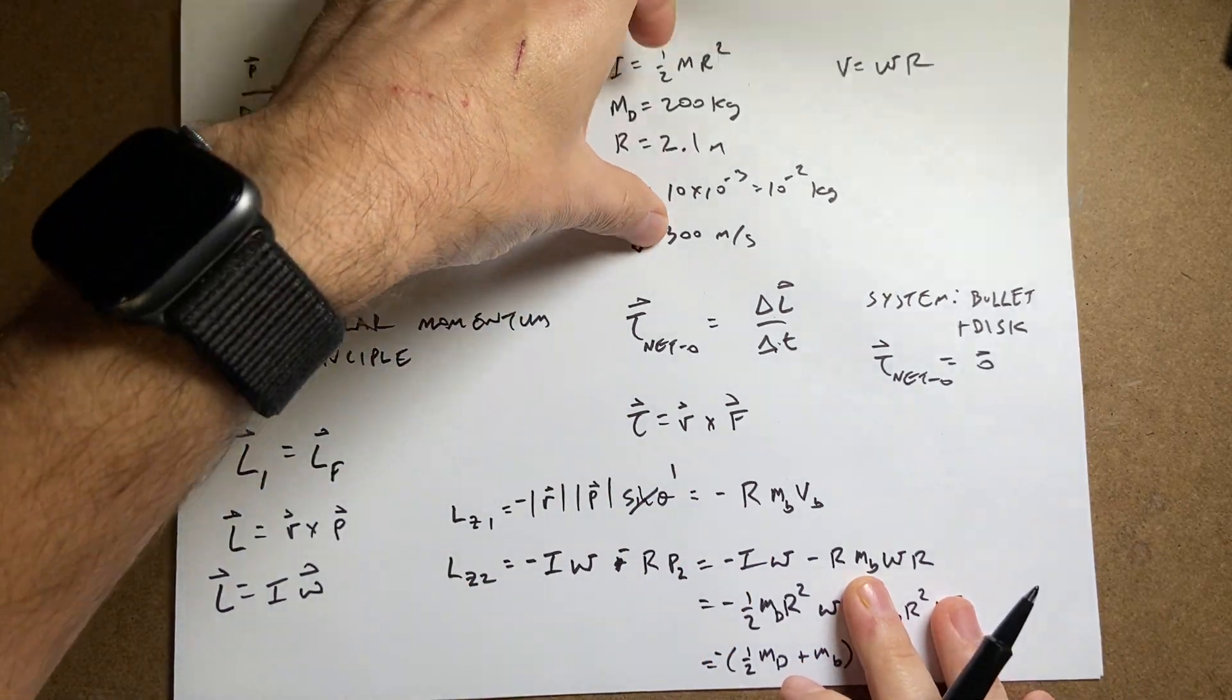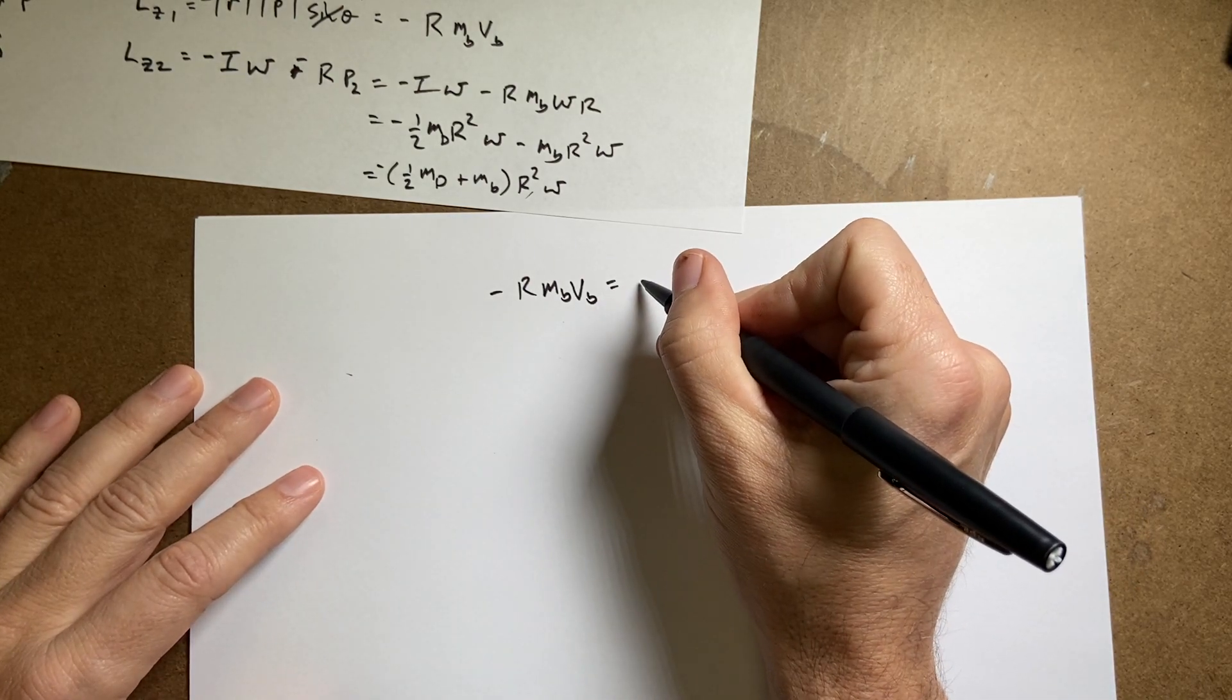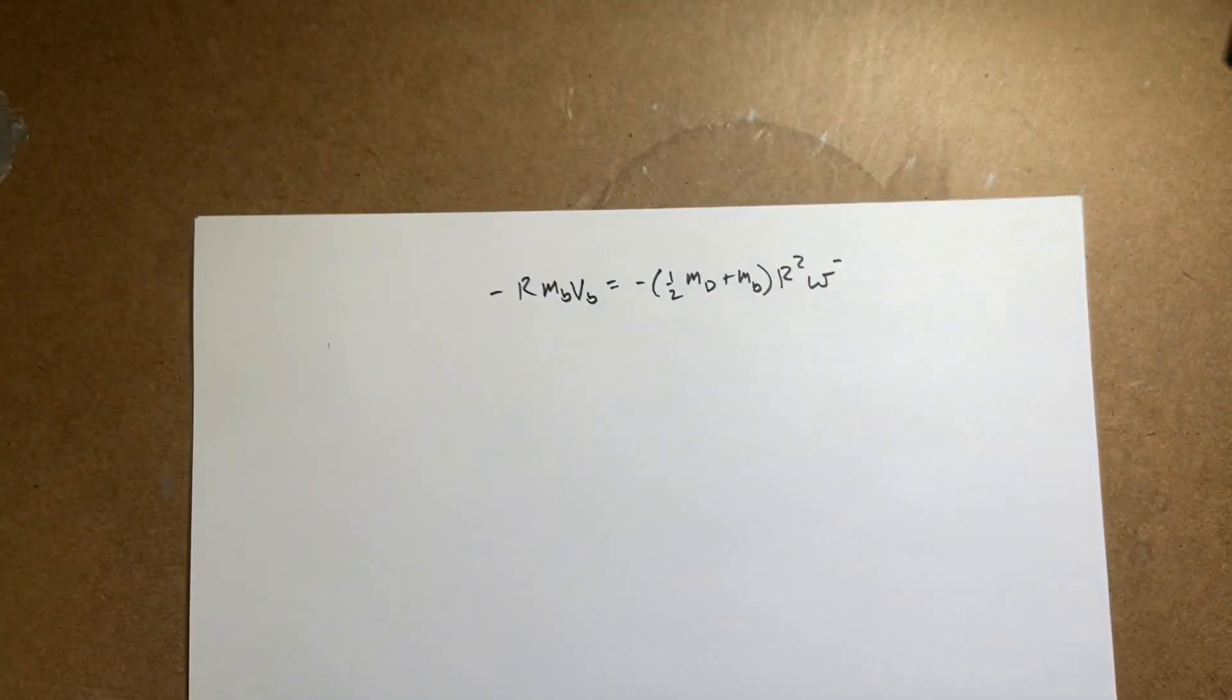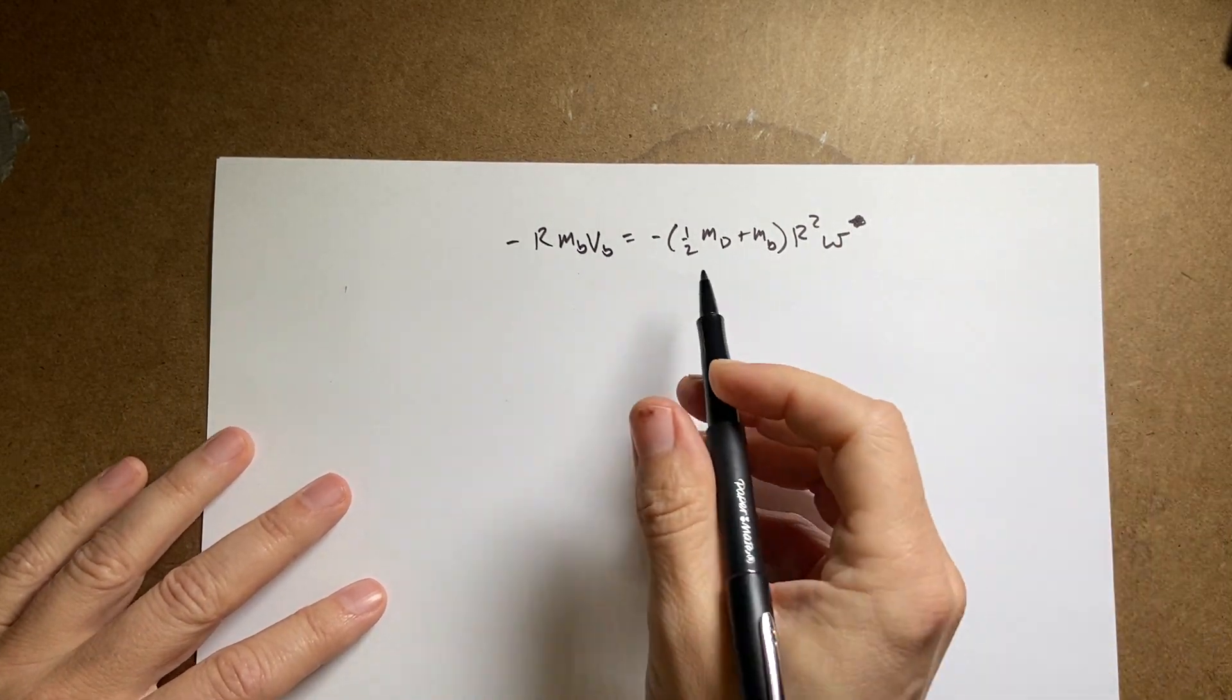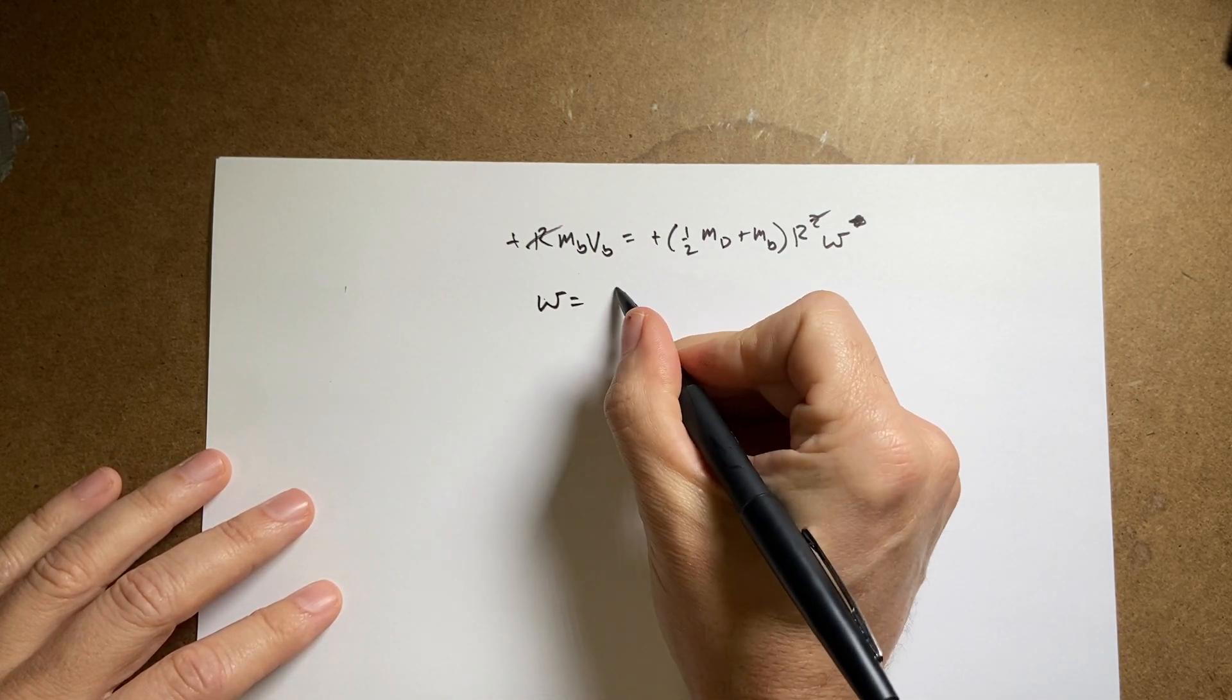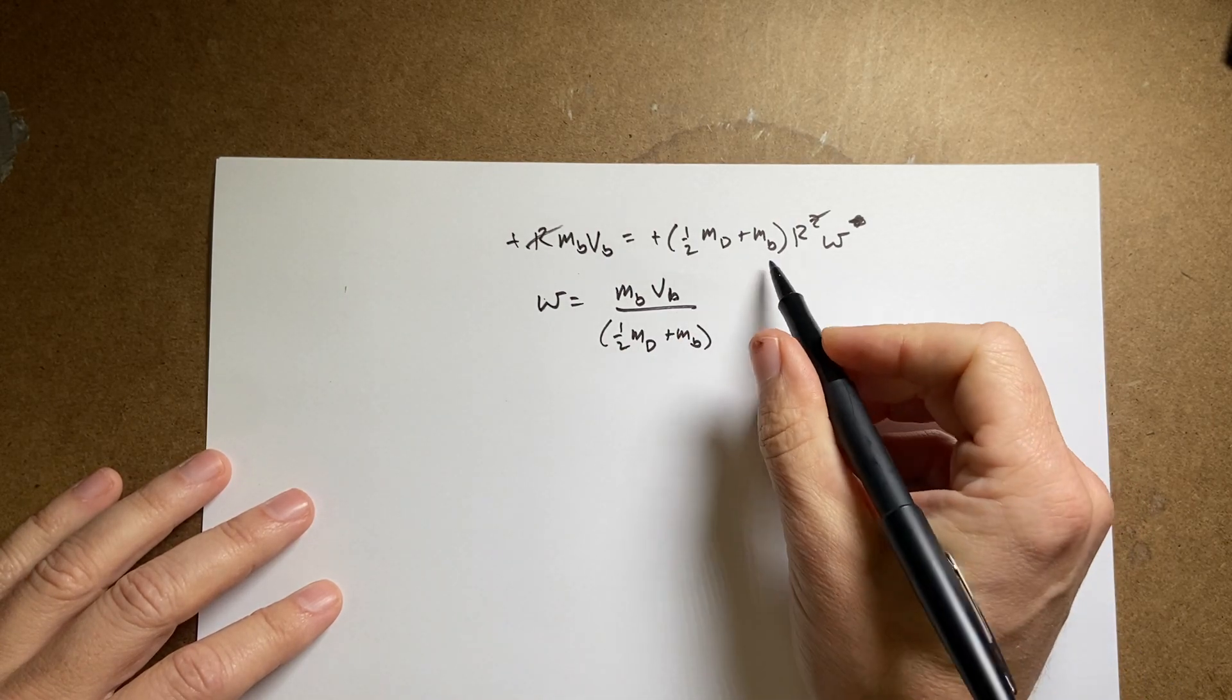So I get negative r mass of the bullet velocity of the bullet equals negative one half mass of the disk plus mass of the bullet times r squared omega. I want to solve for omega. I'm going to divide by negative one, divide by one of the r's, and solve for omega. I get omega equals m_b v_b divided by one half mass of the disk plus the mass of the bullet times r.